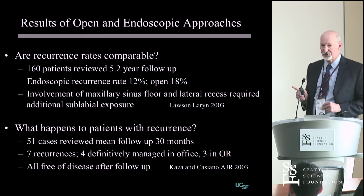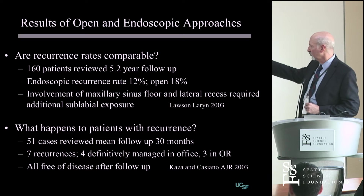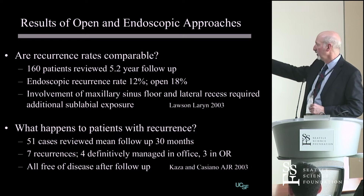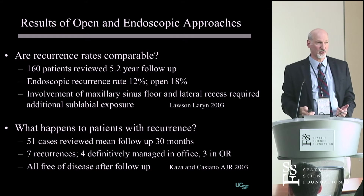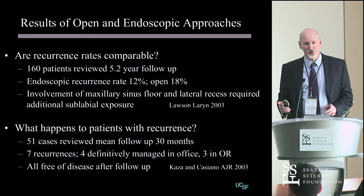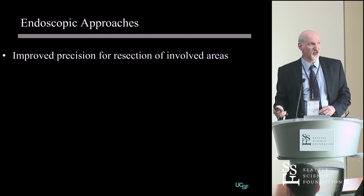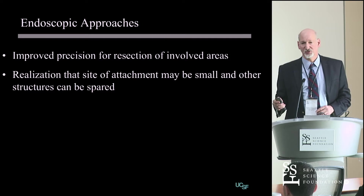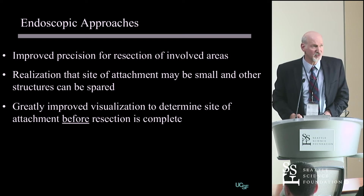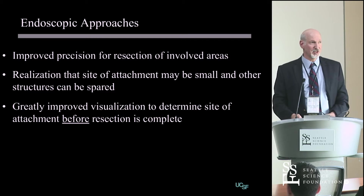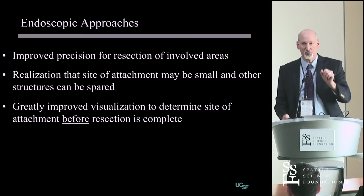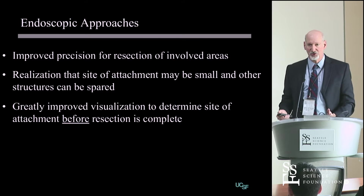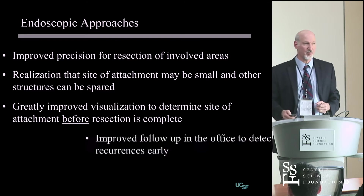What happens to patients with recurrence? In Roy Cassiano's 51 reviewed cases, most recurrences were managed in the office or with minor procedures in the operating room. The endoscopic ability to follow these patients is absolutely critical. With an endoscopic approach, you have improved resection — you can see the site of attachment. You just carefully microdebride the tumor without causing trauma to the surrounding mucosa, microdebride it back until you find the base.